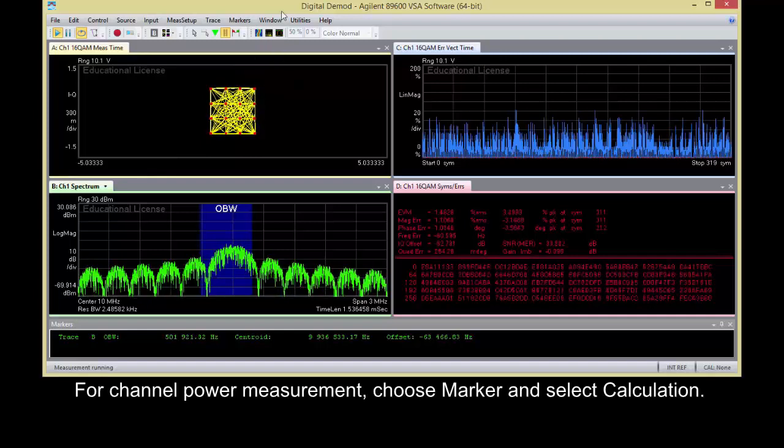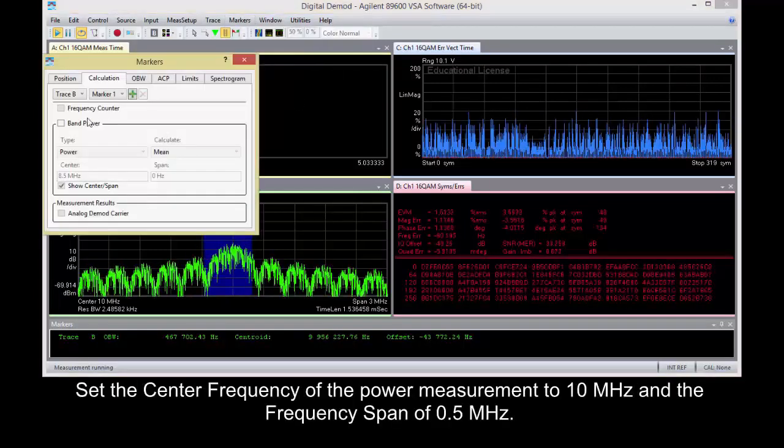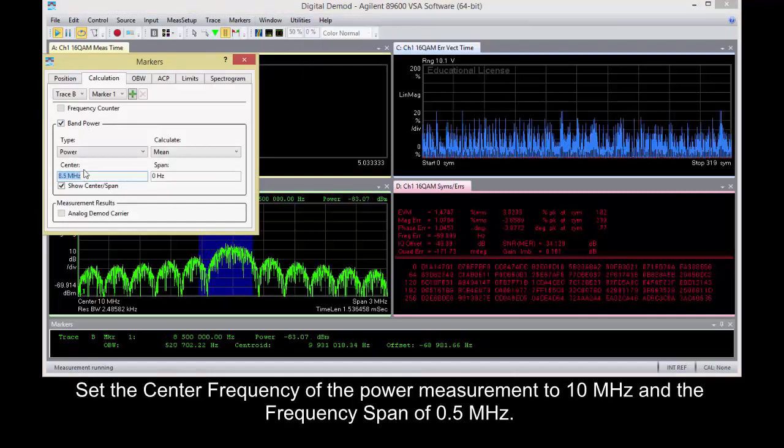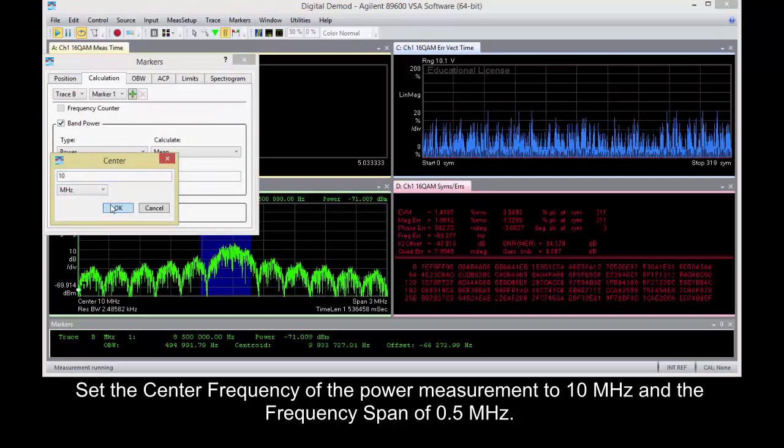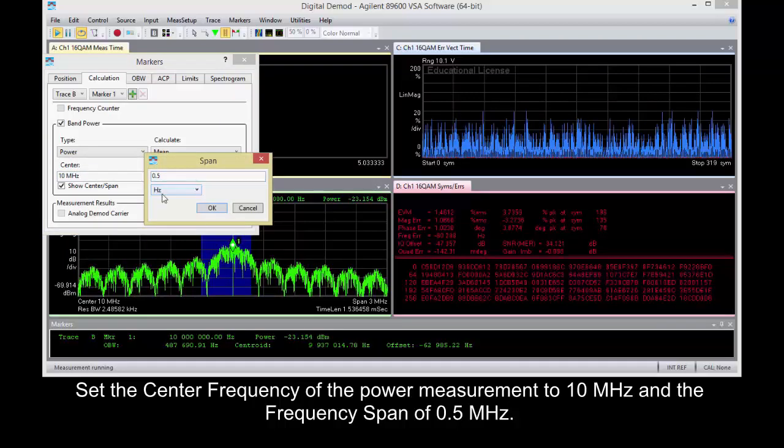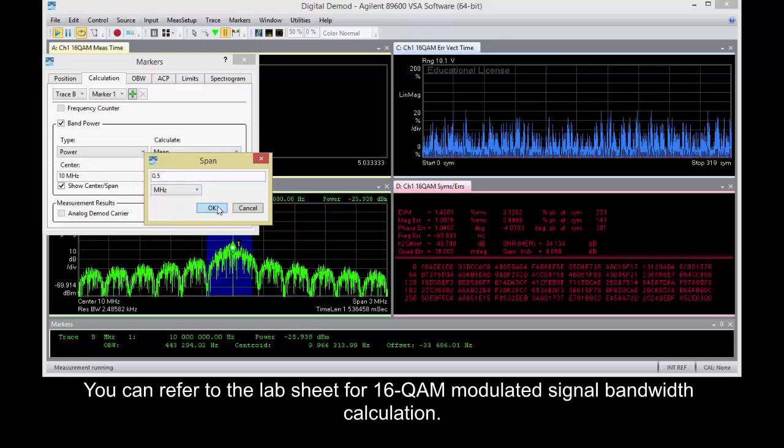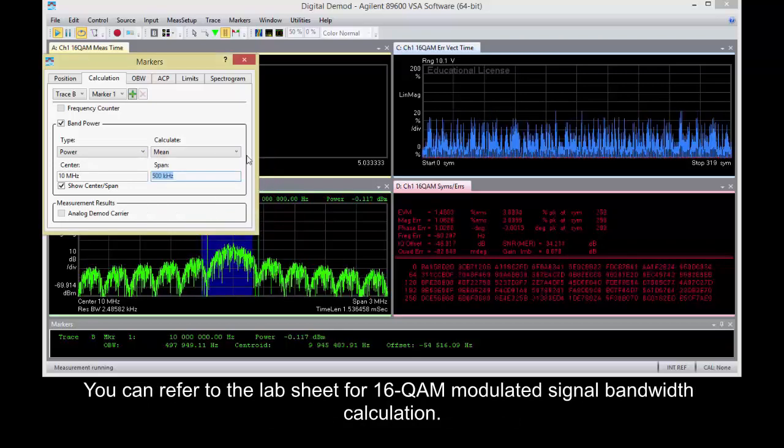For Channel Power Measurement, choose Marker and select Calculation. Set the center frequency of the power measurement to 10 MHz and the frequency span of 0.5 MHz. You can refer to the lab sheet for 16QAM modulated signal bandwidth calculation.